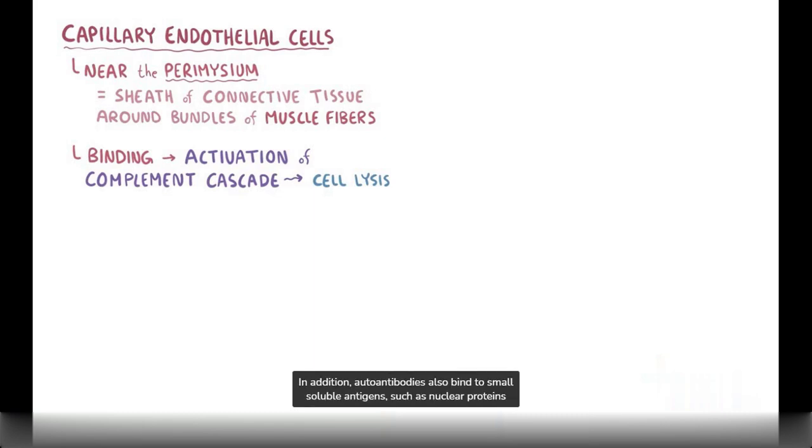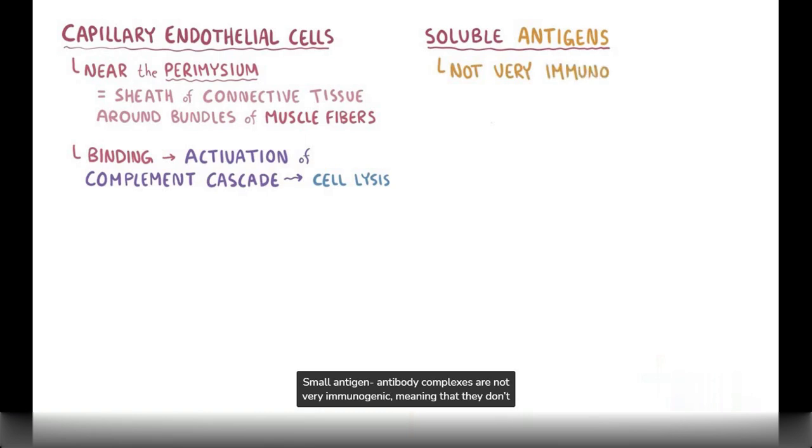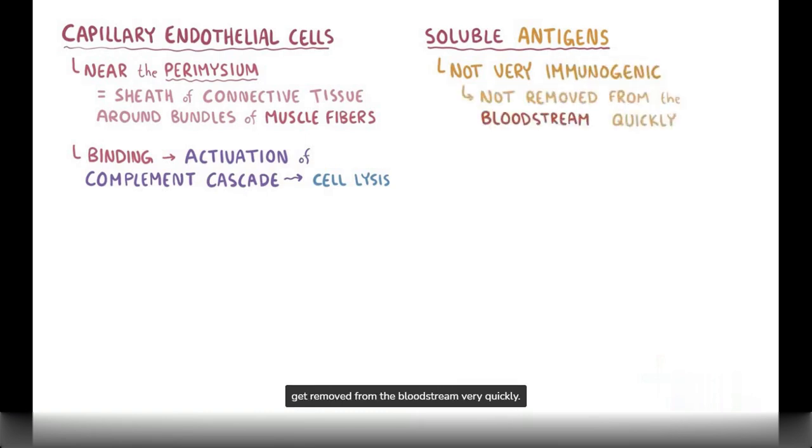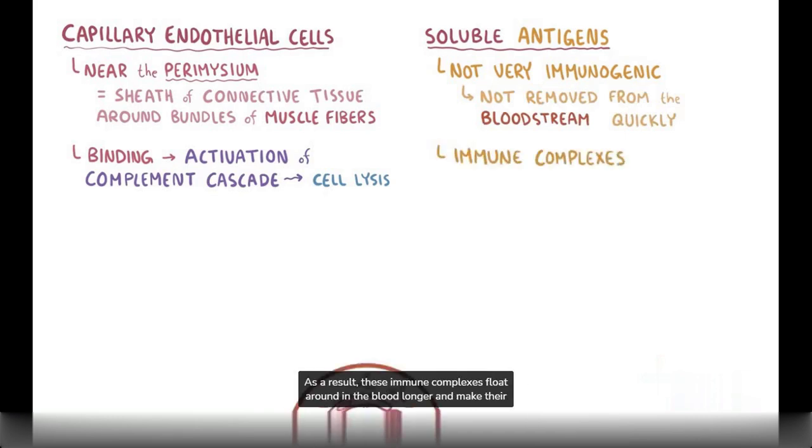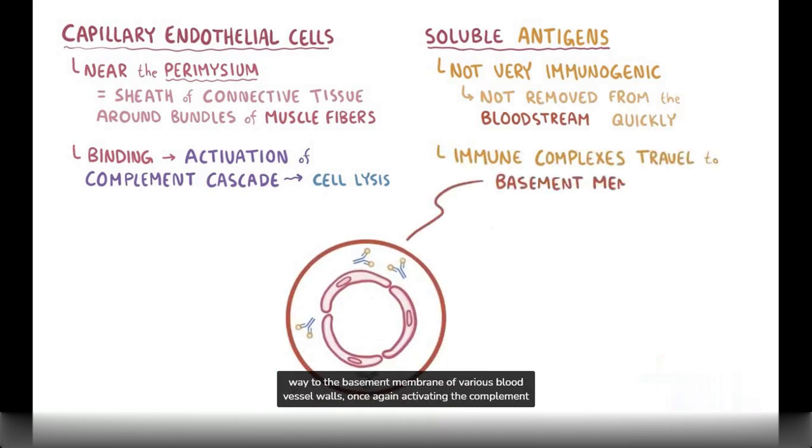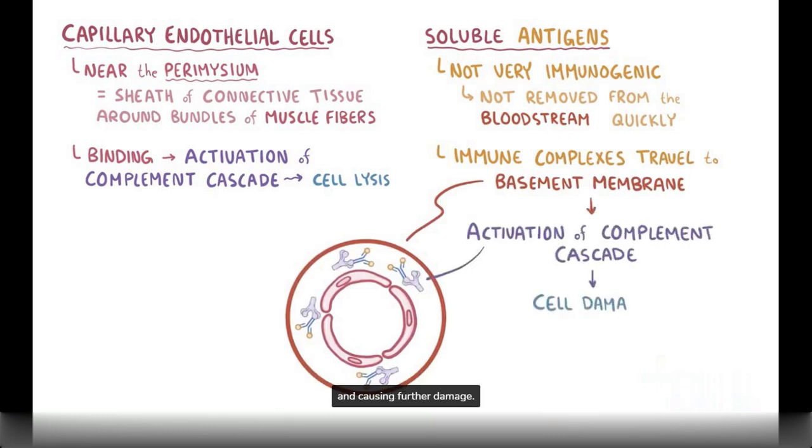In addition, autoantibodies also bind to small soluble antigens, like nuclear proteins that get released from damaged cells and form antigen-antibody complexes. Small antigen-antibody complexes are not very immunogenic, meaning that they don't end up getting removed from the bloodstream very quickly. As a result, these immune complexes float around in the blood longer and make their way to the basement membrane of various blood vessel walls, once again activating complement and causing further damage.